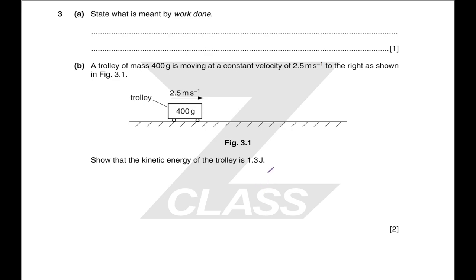Work done — that's a definition. A trolley of mass 400 grams is moving at a constant velocity to the right. Show that the kinetic energy is 1.3 joules. That is nice and simple — you just use half mv squared.